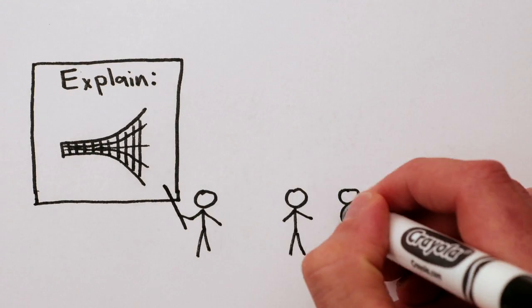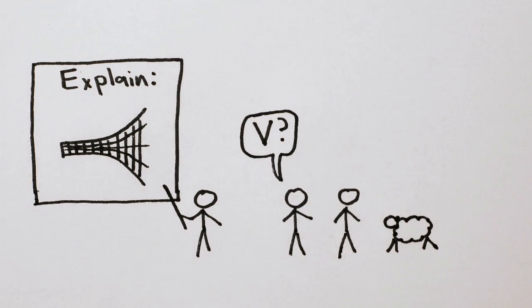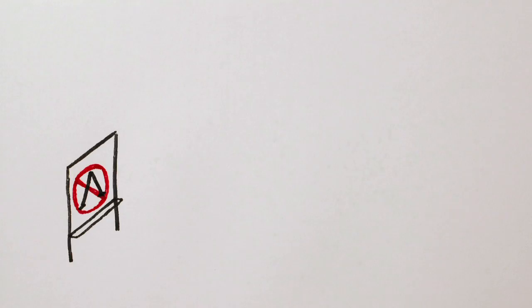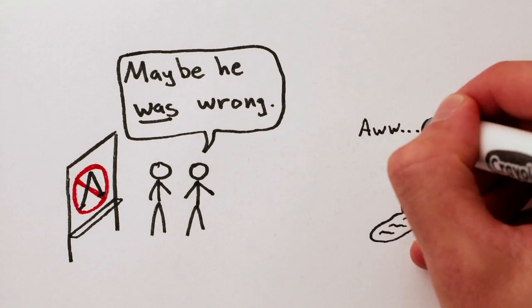So theoretical cosmologists are trying to understand what could be going on. Is it really vacuum energy? Is it some variation of that? Or is it even a modification of Einstein's general relativity, our theory of gravity?